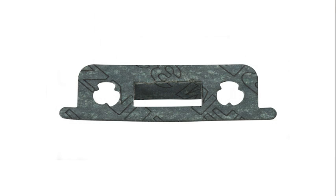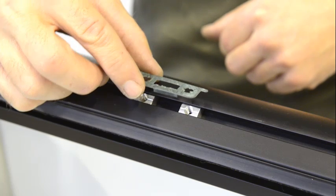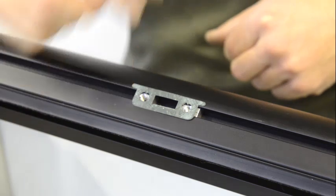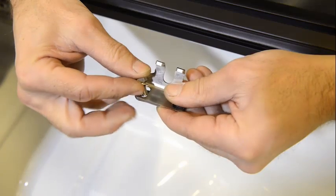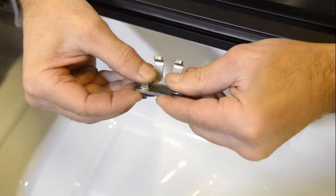Bend the ear on the gasket. Place the gasket over the T-stones. Make sure the holes in the gasket are over the T-stones. Mount the bracket with the bolts and washers.